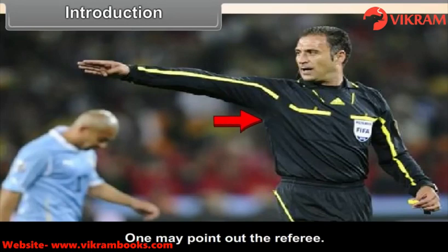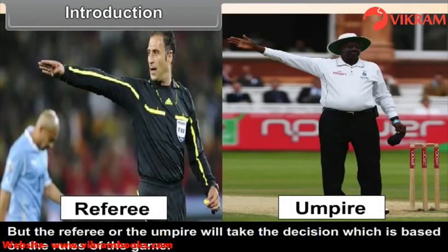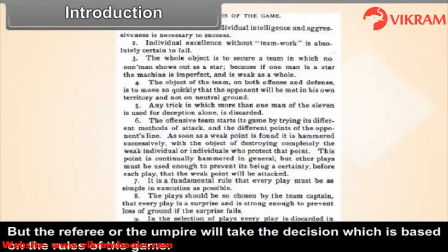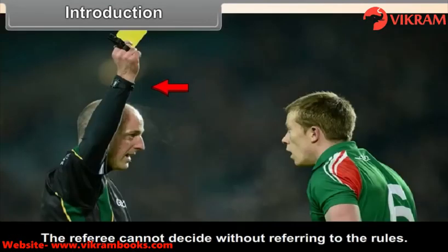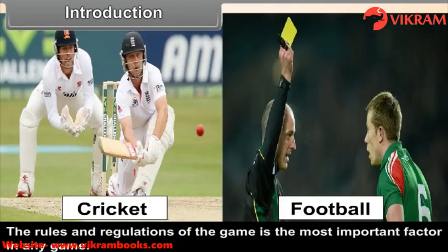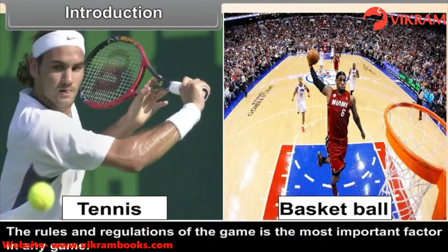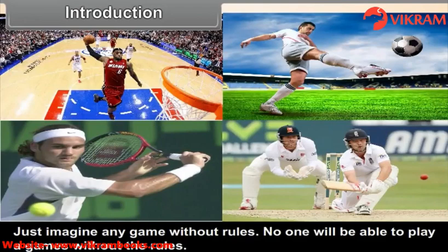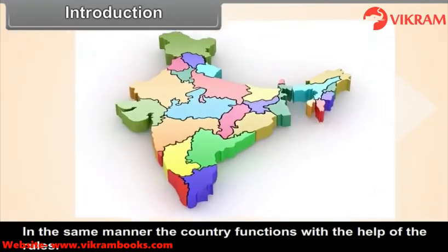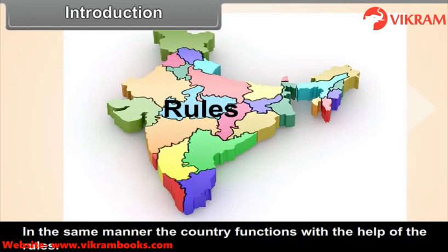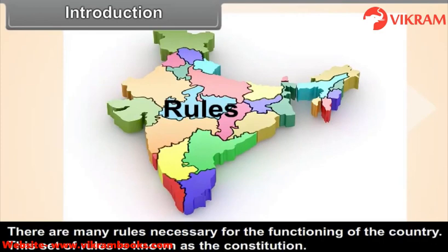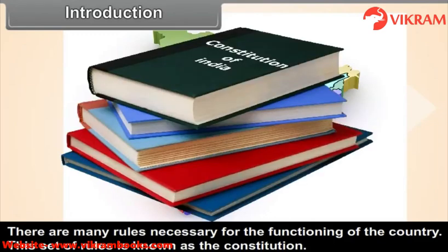One may point out the referee. But the referee or the umpire takes decisions based on the rules of the game — the referee cannot decide without referring to those rules. The rules and regulations of the game are the most important factor. Just imagine any game without rules; no one would be able to play. In the same manner, a country functions with the help of rules, and this set of rules is known as the Constitution.